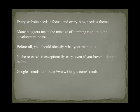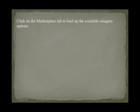Another great method of combining both market research and product research is by using the ClickBank marketplace, available at www.clickbank.com. Within just a few minutes of browsing potential categories, not only can you come up with a profitable market, but you can create a swipe file of high-end affiliate products that you can promote throughout your blog network — two birds with one stone. Visit www.clickbank.com and click on the Marketplace tab to load up the available category options.